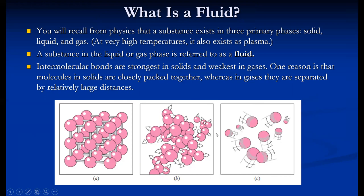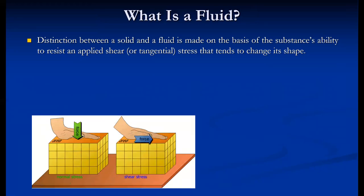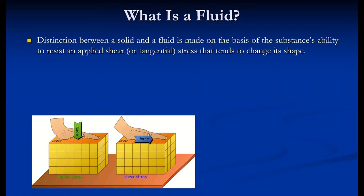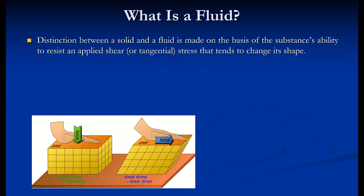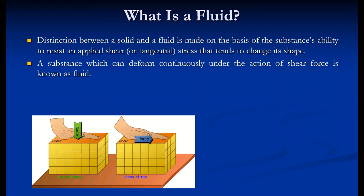Accordingly, the stronger the molecular bonding, the more the substance tends toward solid or semi-solid. The distinction between solid and fluid is made on the basis of a substance's ability to resist an applied shear or tangential stress that tends to change its shape. More force is required to change the shape of a solid, while a substance that can deform continuously under the action of shear force is known as fluid.